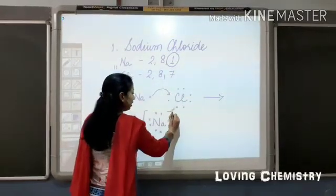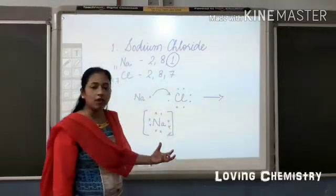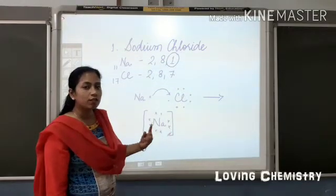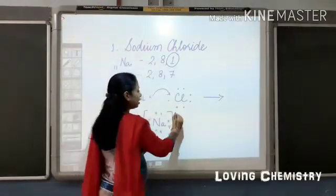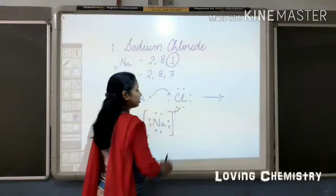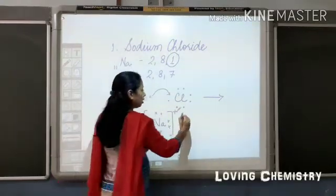But in the process of getting an octet, it has lost one electron and that will be represented by this positive sign.